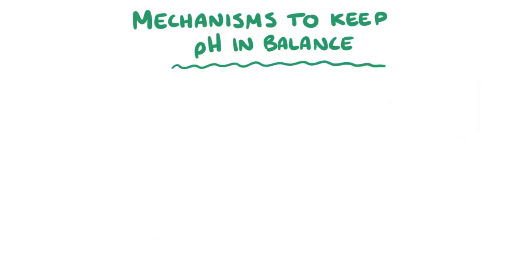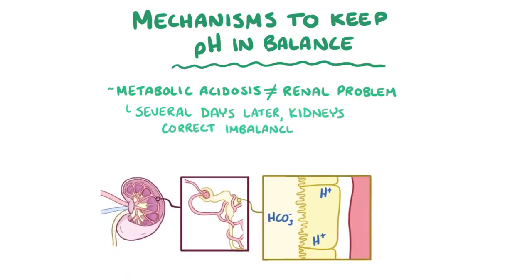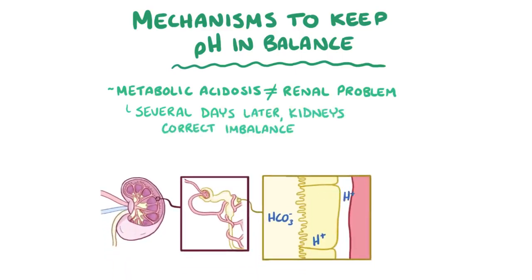An additional mechanism is that if metabolic acidosis isn't caused by some renal problem, then several days later the kidneys usually correct the imbalance. The kidneys excrete more hydrogen ions while also reabsorbing bicarbonate ions, so that it's not lost in the urine.